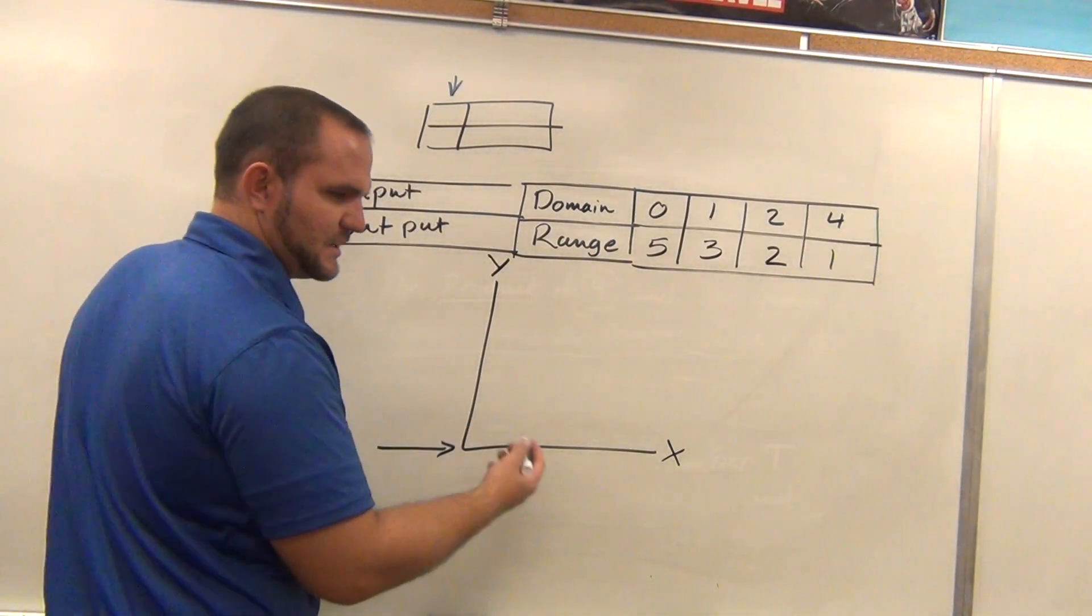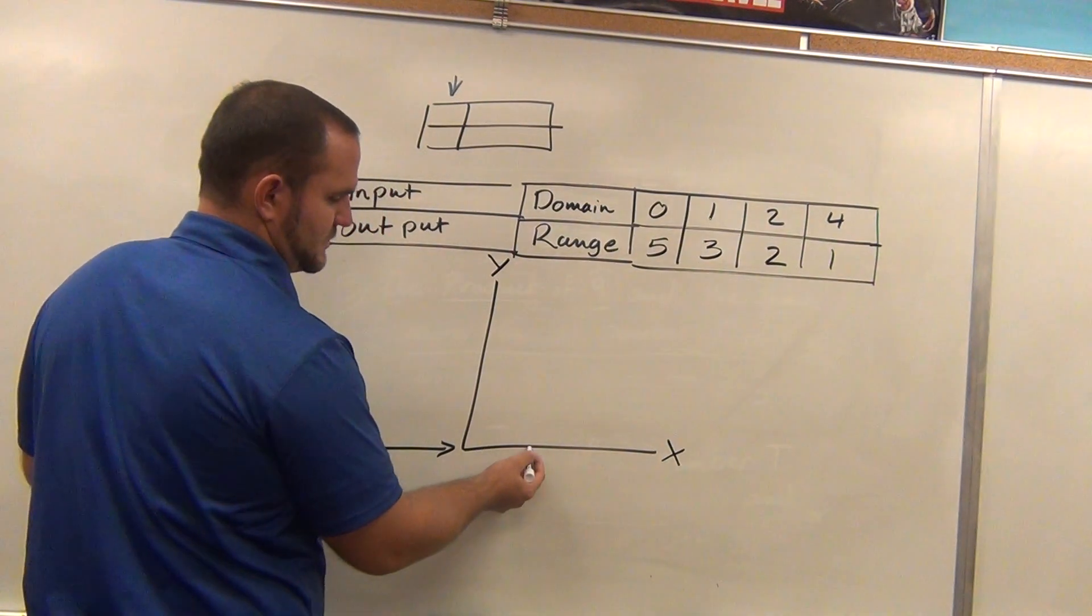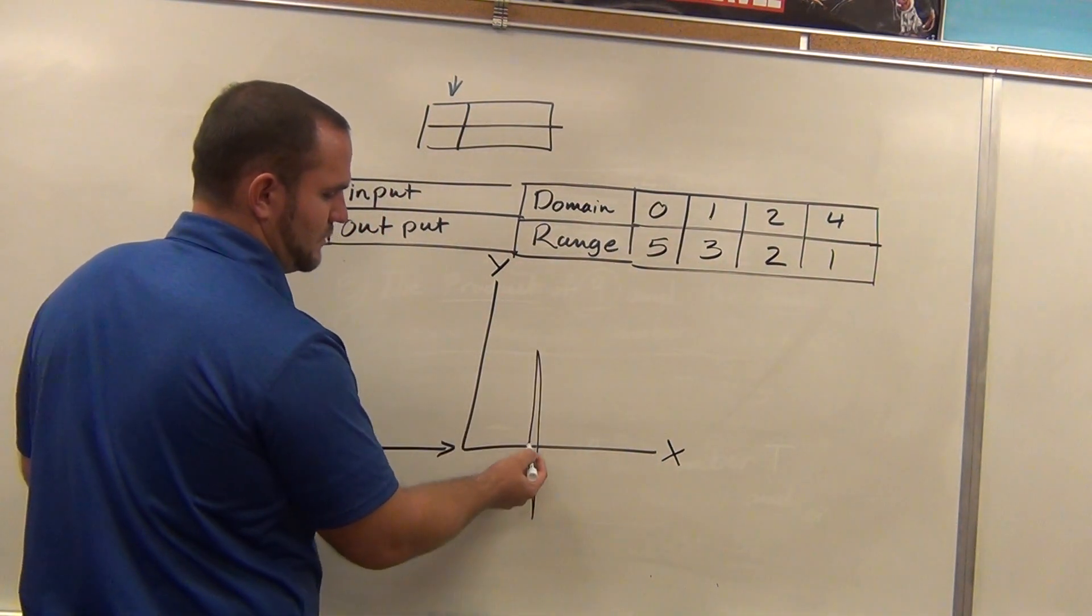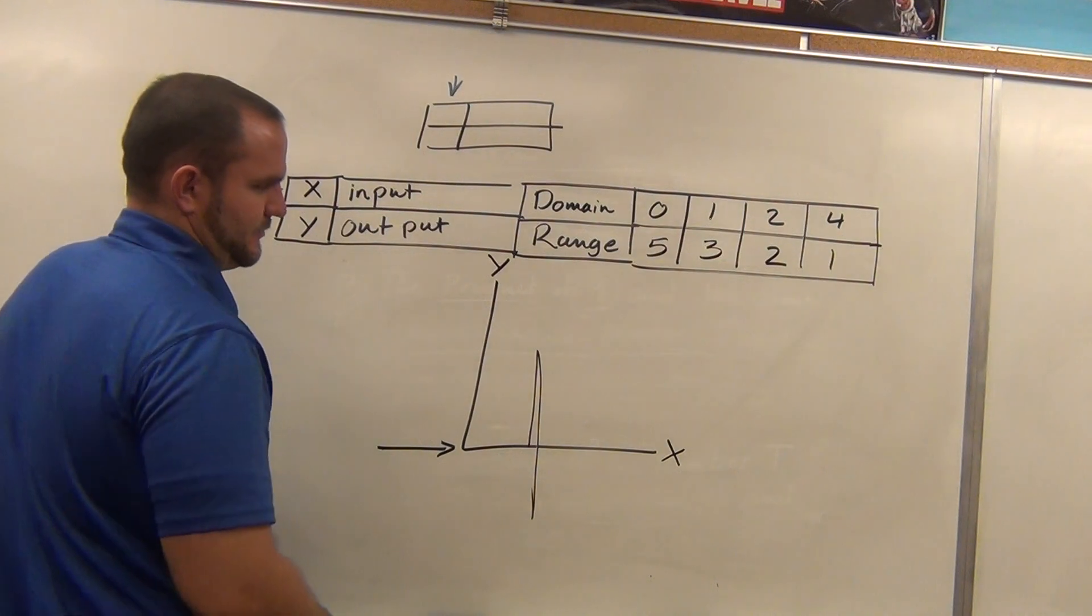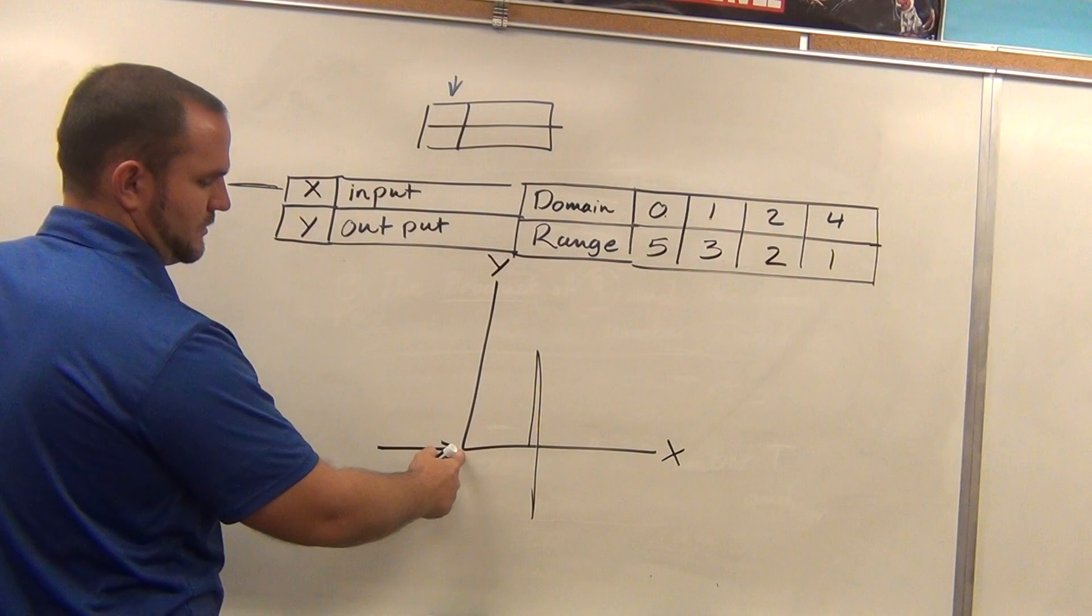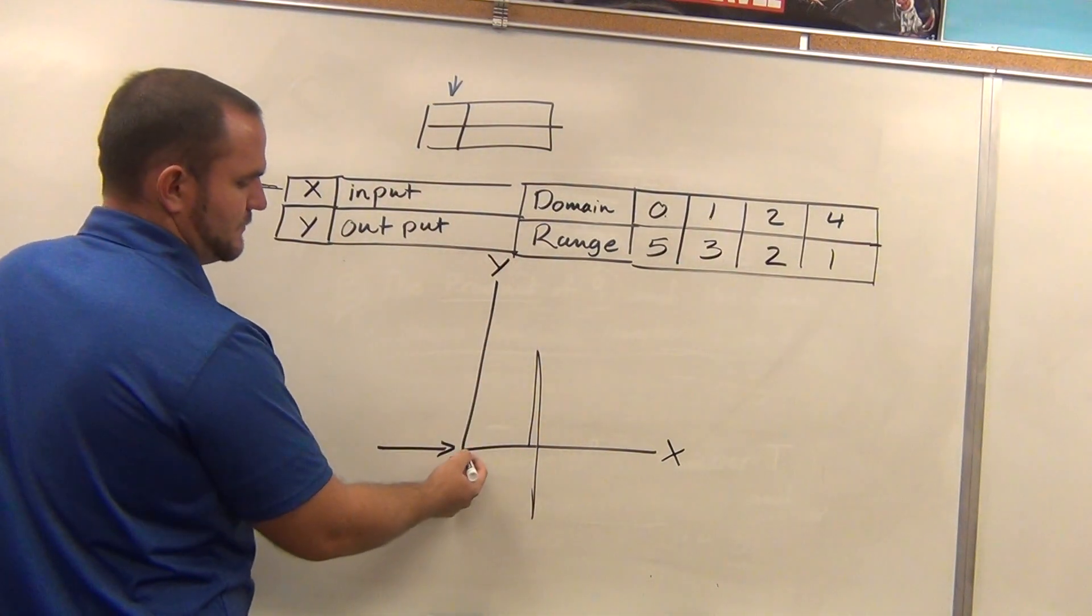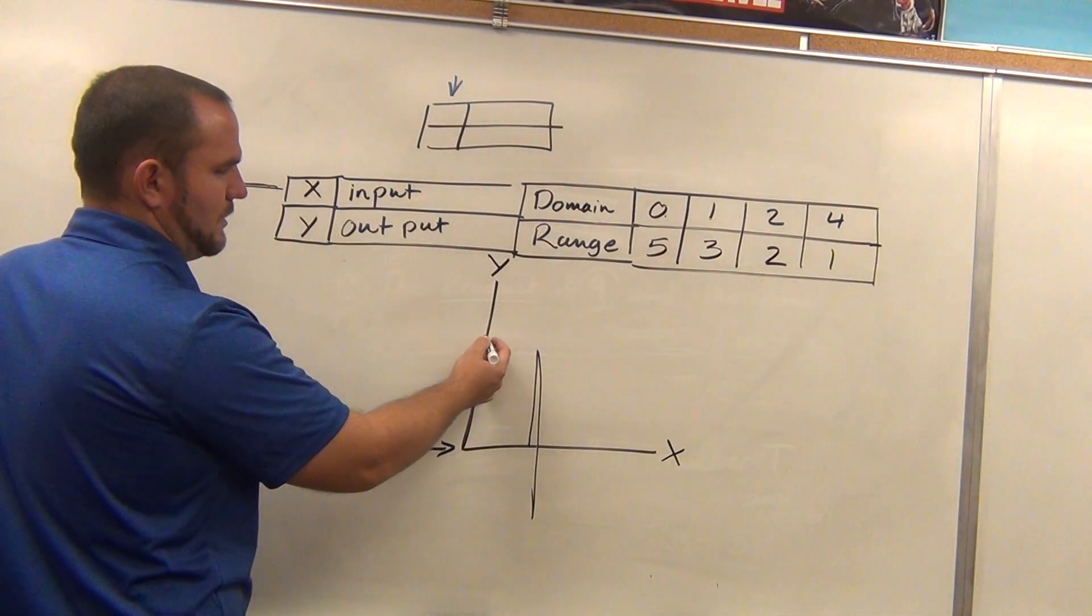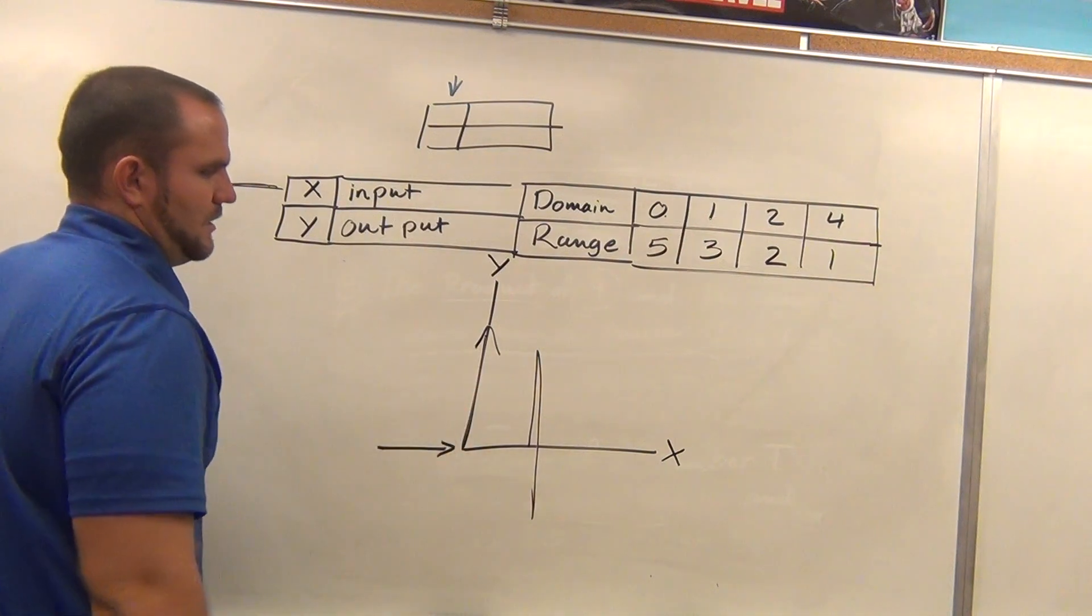Something affects those numbers to tell them how high or low to go on your graph. And so let's say we start with zero. So I'm going to stay here. And then we're going to go to five. And so that would tell me to go up to five.